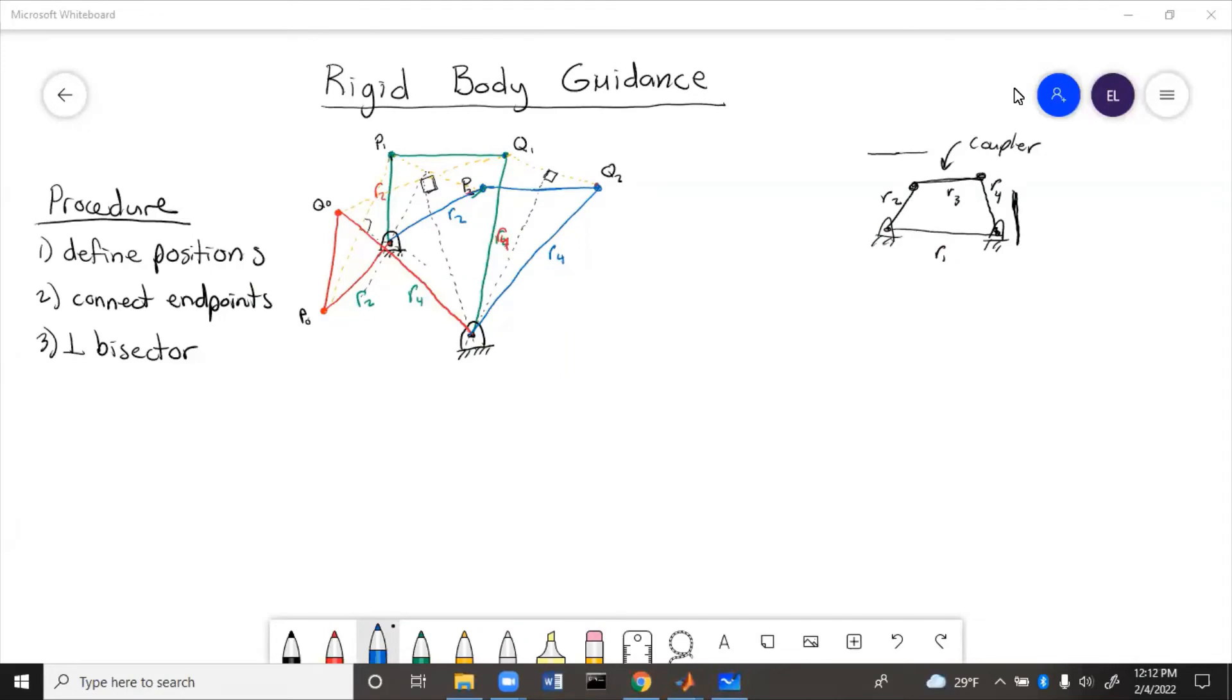So now that we've solved this graphically, how could we solve it analytically? How could we get the actual numbers we need for like coordinates of the ground points? Well, there are two different ways to do this. The line method and the circle method.